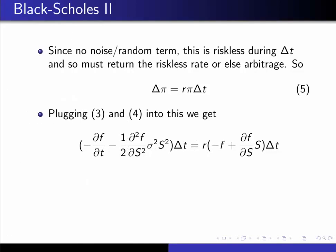So we put in those expressions for Delta Pi and Pi and we have this. Now we just tidy up: divide both sides by Delta T, multiply both sides by minus one to tidy that up a bit, and then move this DF DS times RS to the left-hand side.